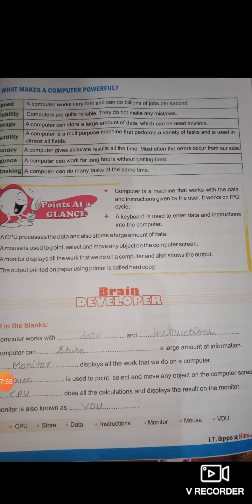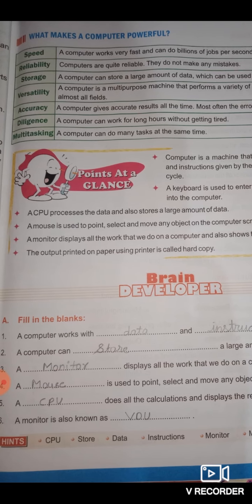Now let's discuss some features that make the computer a very powerful machine. First is speed — a computer is a very fast working machine that can do billions of jobs per second. Second is reliability — computers are quite reliable because they do not make mistakes and always give accurate results. Third is storage — computers can store a huge amount of data.